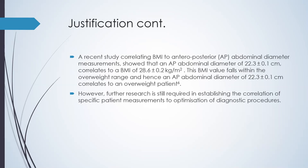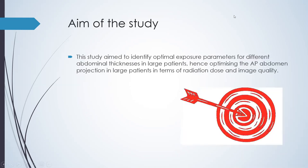There have been various studies conducted to correlate specific BMI to specific patient measurements, including the anteroposterior AP abdominal diameter. A recent study showed that an AP abdominal diameter of 22.3 centimeters correlates to a BMI of 28.6, which falls within the overweight range. However, further research is still required in establishing the correlation of specific patient measurements to optimization of diagnostic procedures. This study aims to identify the optimal exposure parameters for different abdominal thicknesses in large patients, optimizing the AP abdominal projection in terms of radiation dose and image quality.